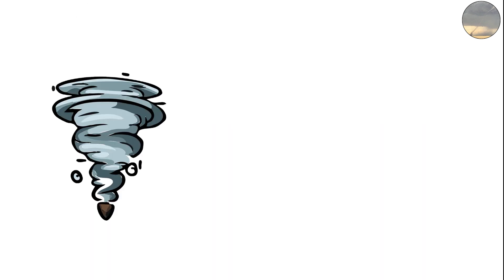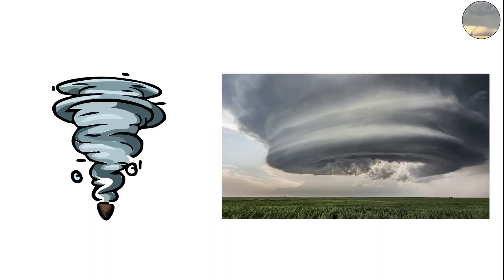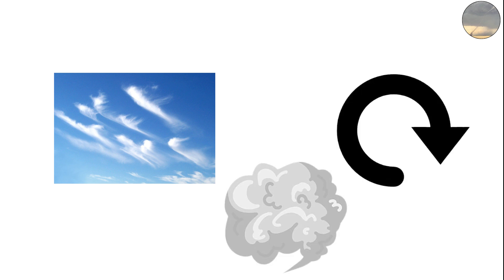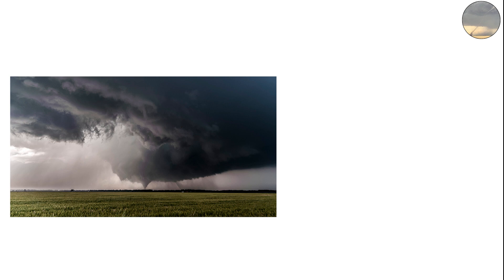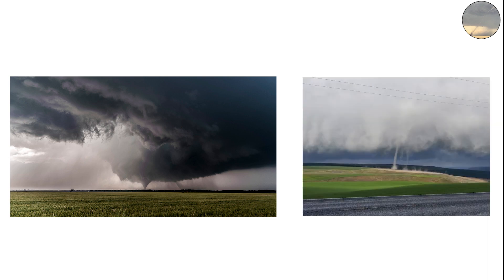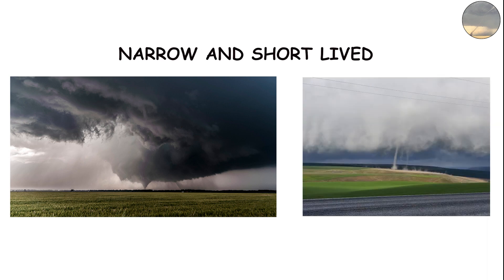Landspouts — tornadoes without supercells. Not all tornadoes come from supercells. Landspouts are weaker tornadoes that form differently, usually under fair-weather cumulus clouds rather than huge thunderstorms. They occur when surface-level wind shear causes a small rotation that's stretched upward by rising air. Because they don't have the deep organized structure of supercell tornadoes, landspouts are usually narrow and short-lived.